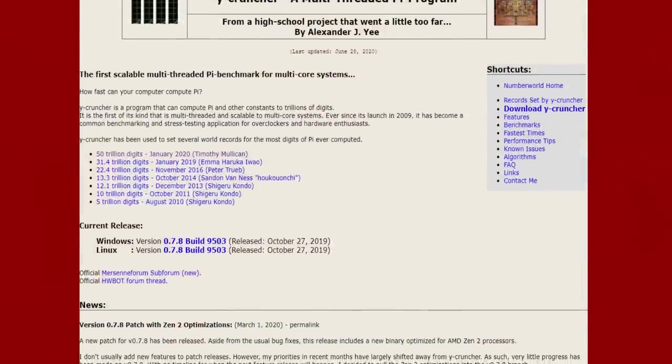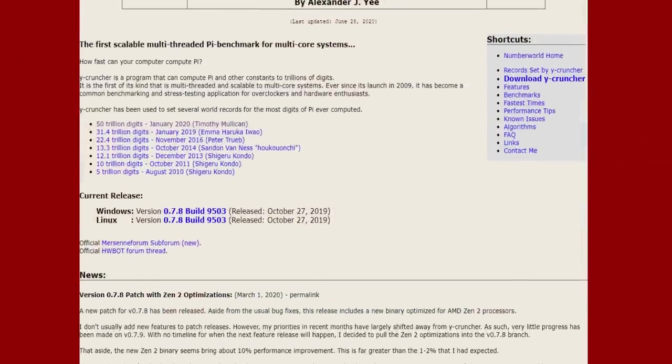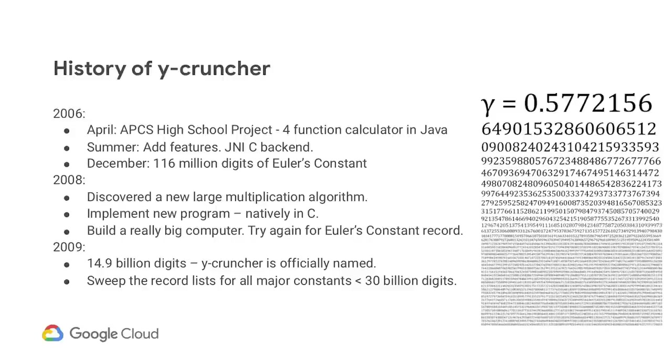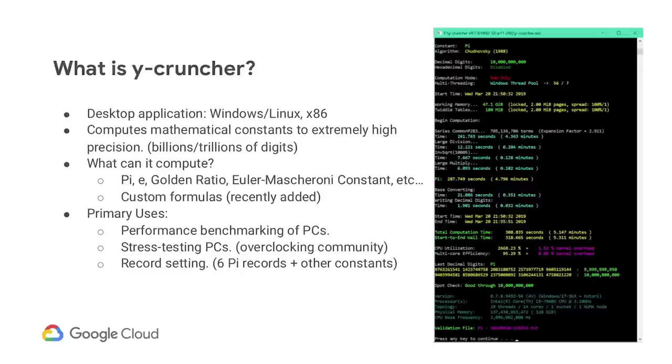The tool I'm going to be talking about today is one called Y-Cruncher, made by Alexander Yee, who's currently a financial analyst at a firm in Chicago. But since high school he has been writing programs to calculate the digits of mathematical constants. His Y-Cruncher program, which is over a decade in the making and runs to half a million lines of code, is able to calculate many of the most important mathematical constants to essentially almost any level of precision.